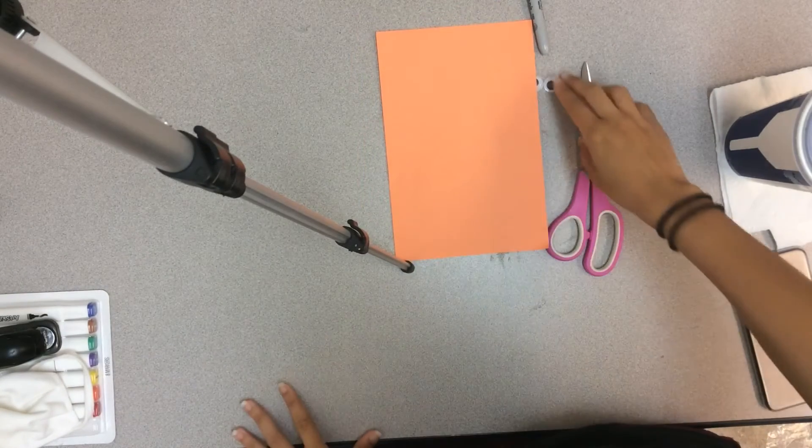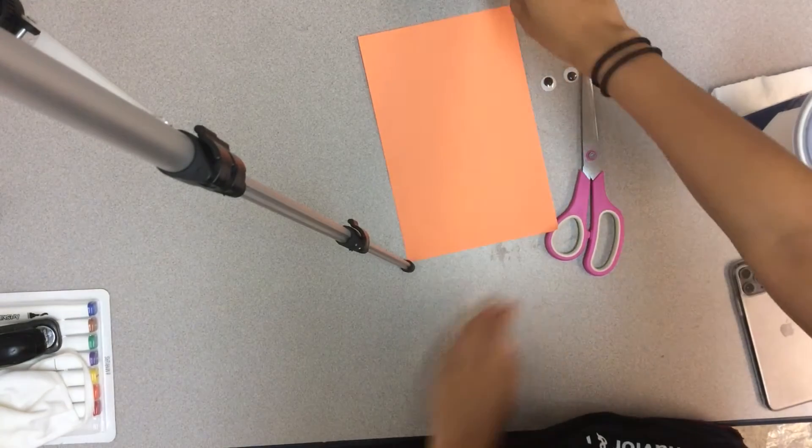For this video you're going to need an orange piece of paper, some scissors, your two googly eyes, some tape, and a marker.